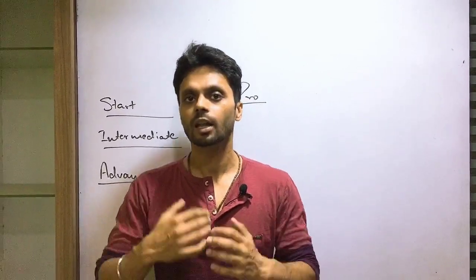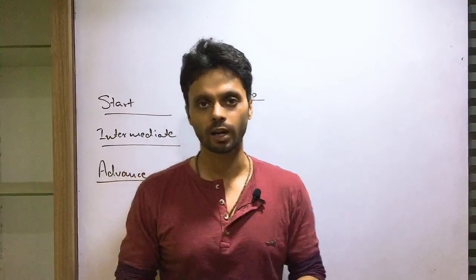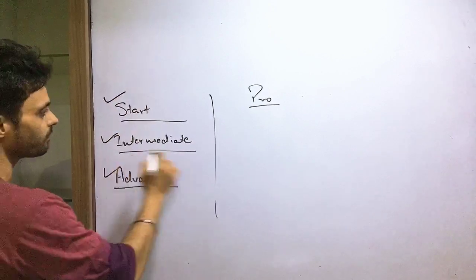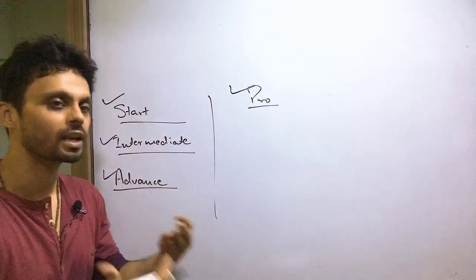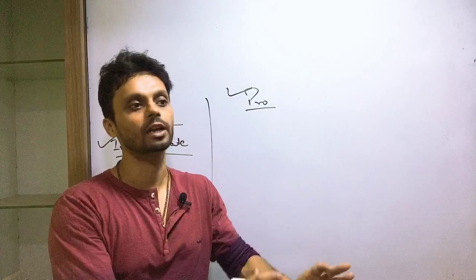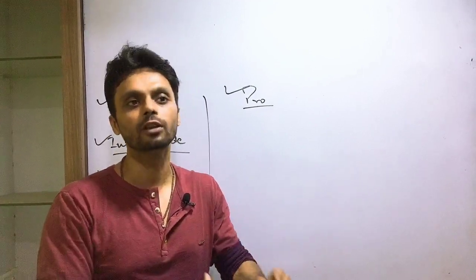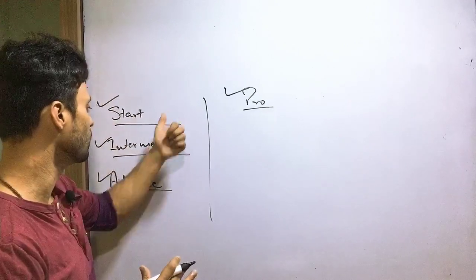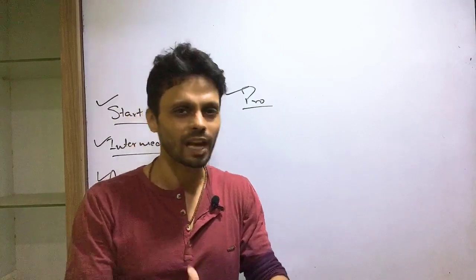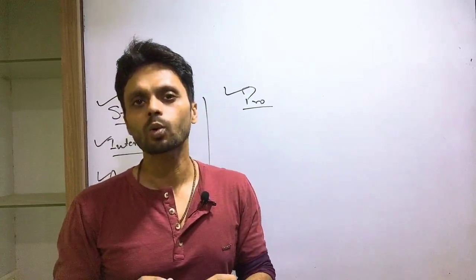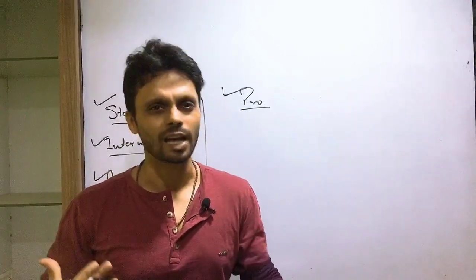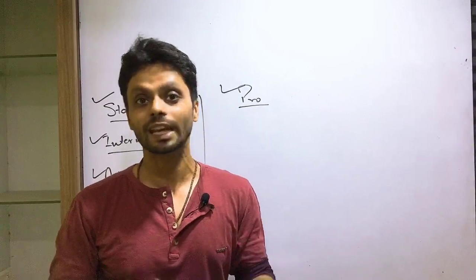Let's understand what needs to be done after knowing what level you are at. I have divided this into four parts: Start, Intermediate, Advanced, and Pro. Start is also known as Beginner — for example, if you never read anything apart from your study material, no novels or newspapers, you are at this level. Intermediate is for those who read a newspaper occasionally or maybe read Indian novels like Chetan Bhagat, finishing two to three books in a year.